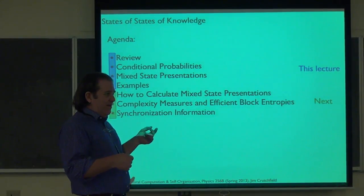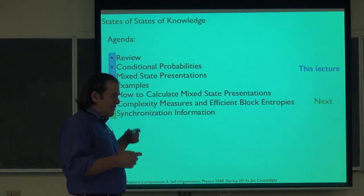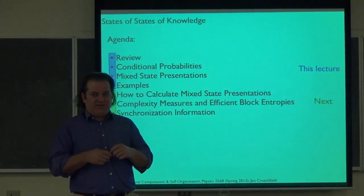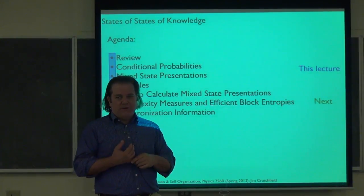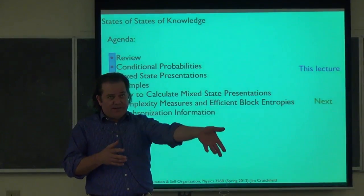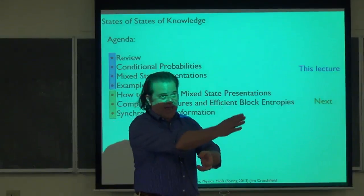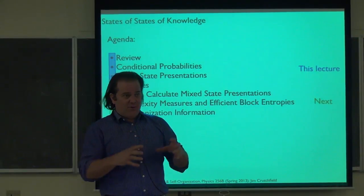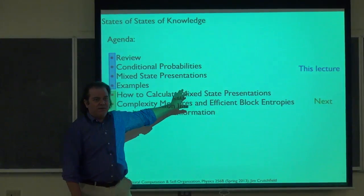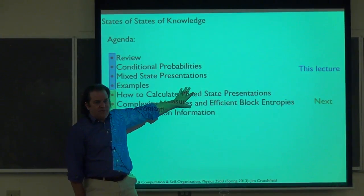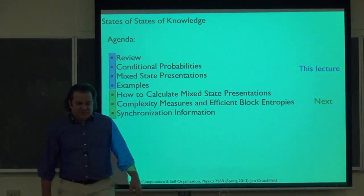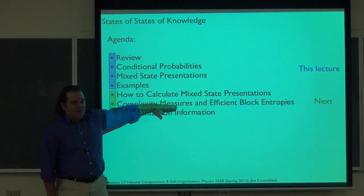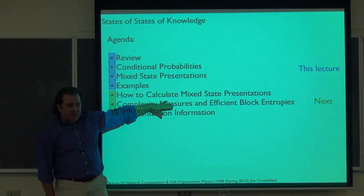Next week we'll revisit synchronization information. There's a key problem: if you have a stochastic process and you're looking at words of length L, and it has a slightly positive entropy rate, the number of sequences of length L grows exponentially in L — that's an exponential number of numbers to keep track of. This makes estimating word distributions quite problematic, especially if you're doing it literally from data by sweeping a window of length L and counting things up.